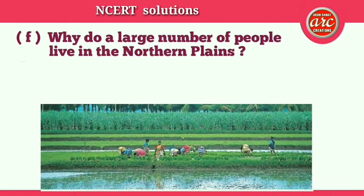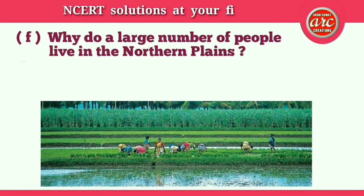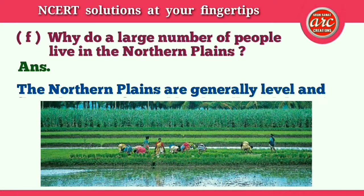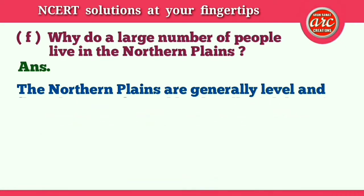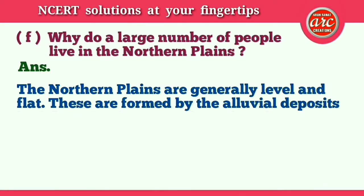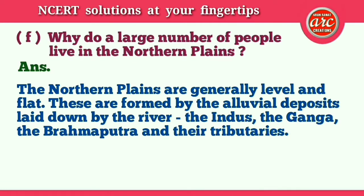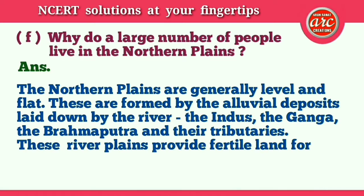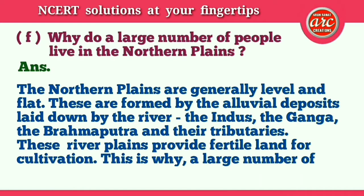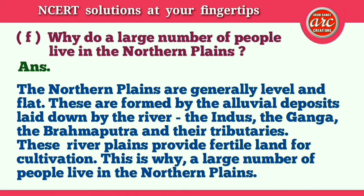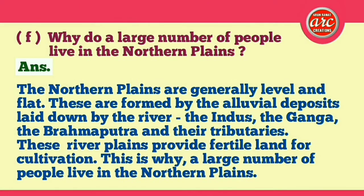(f) Why do a large number of people live in the northern plains? Answer: The northern plains are generally level and flat. They are formed by the alluvial deposits laid by the rivers — the Indus, the Ganga, the Brahmaputra, and their tributaries. These river plains provide fertile land for cultivation, which is why a large number of people live there.